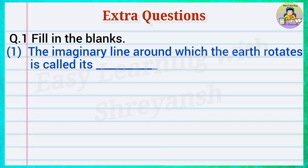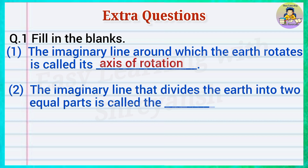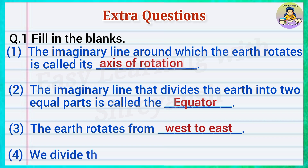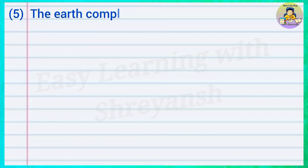One: The imaginary line around which the earth rotates is called its — answer: axis of rotation. Two: The imaginary line that divides the earth into two equal parts is called the — answer: equator. Three: The earth rotates from — answer: west to east.